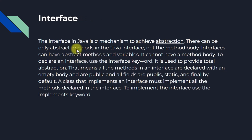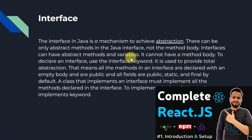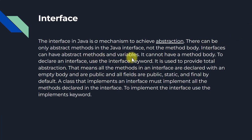Next, the interface. The interface in Java is a mechanism to achieve abstraction. There can be only abstract methods in the Java interface — not the method body. Interfaces can have abstract methods and variables. It is used to provide total abstraction, meaning all the methods in an interface are declared with an empty body, and all fields are public, static, and final by default.